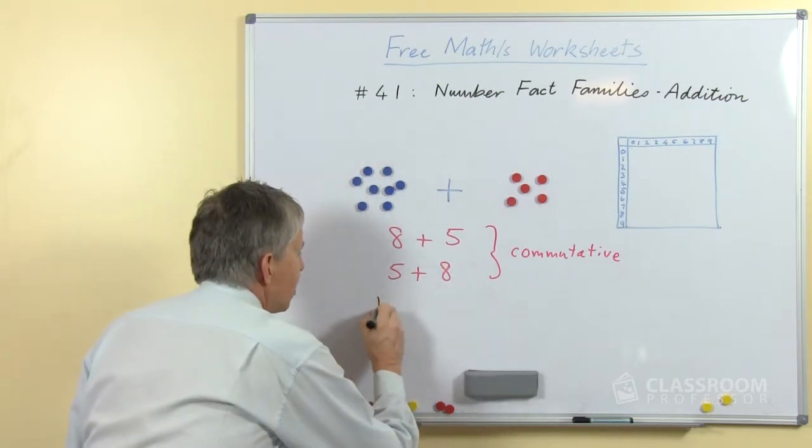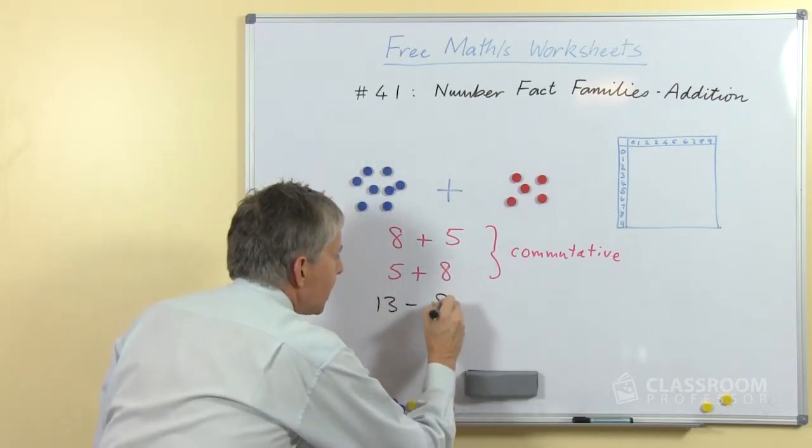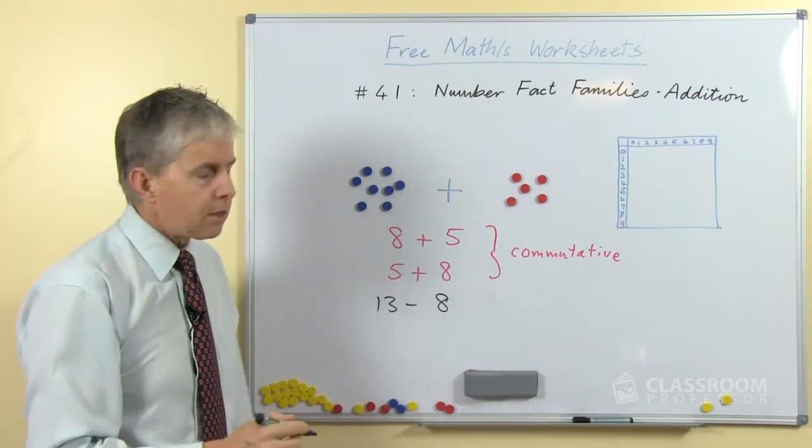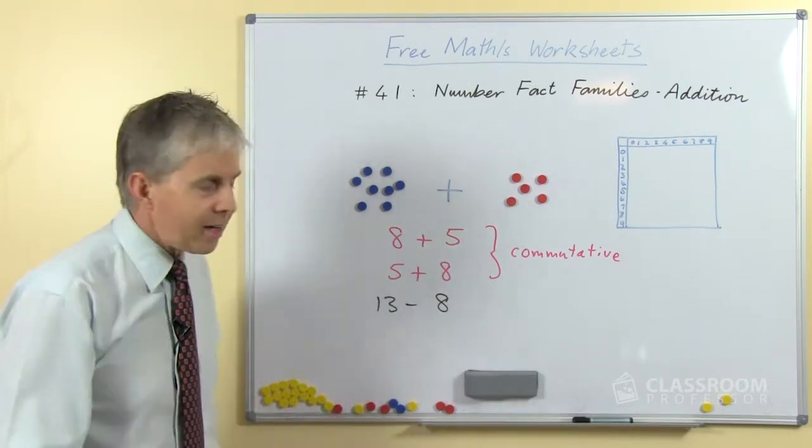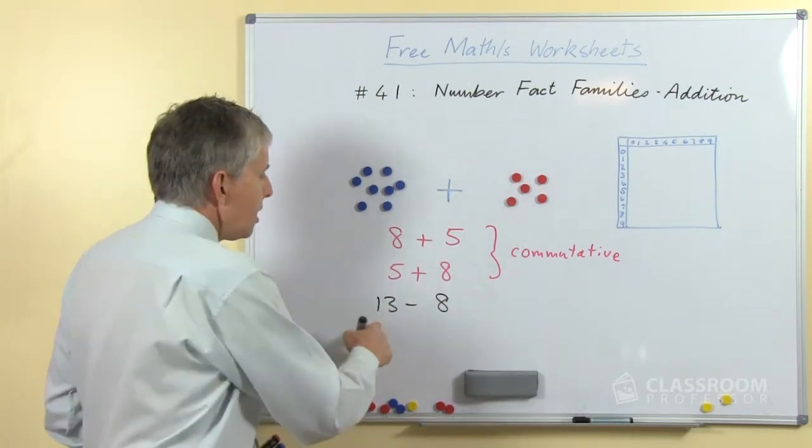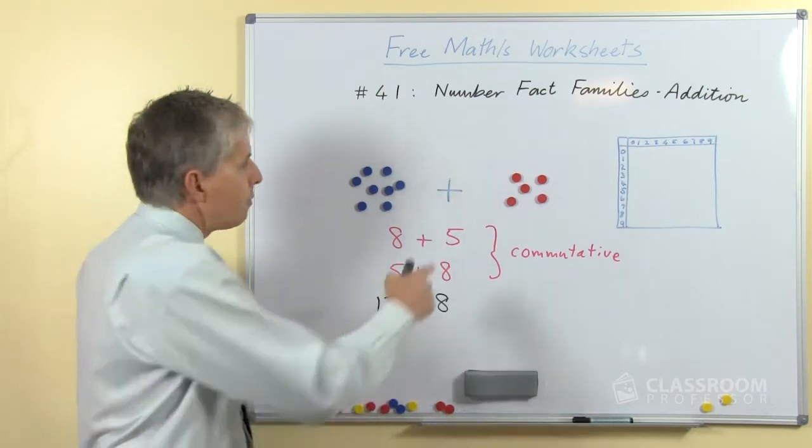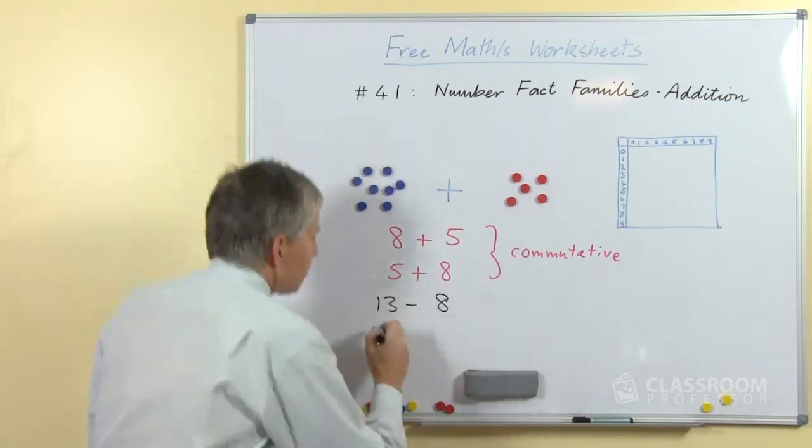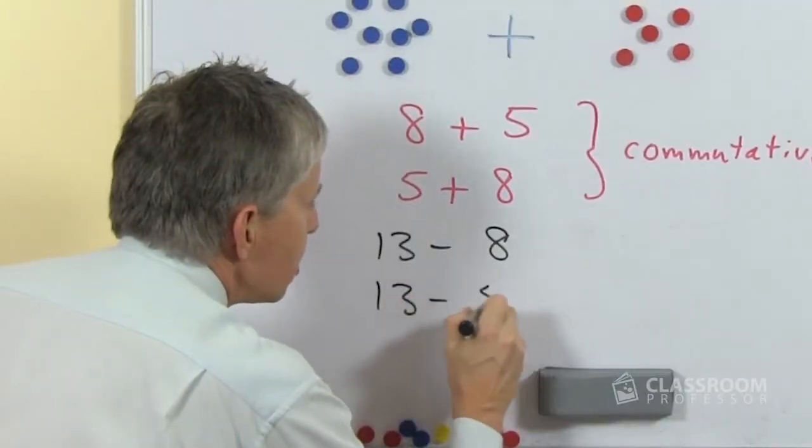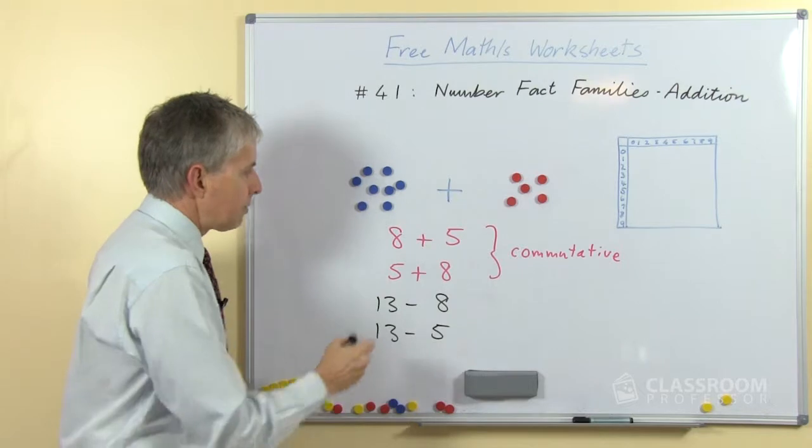8 plus 5 is 13. So what would happen if we started with 13 take away 8? 8 plus 5 is 13. What would happen if we took 8 away from 13? Obviously this is the 8, we would have 5 left. What would happen if we started with 13 and took away the 5? We'd have the 8 left.